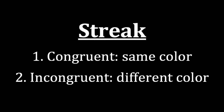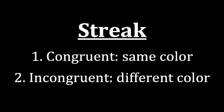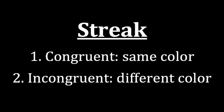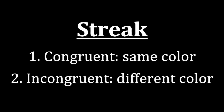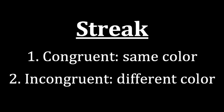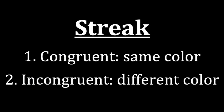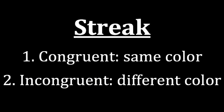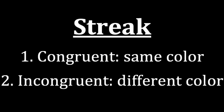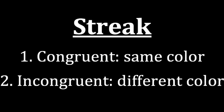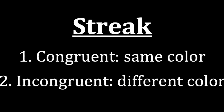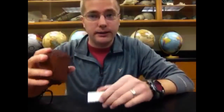When we look at streak, we are looking at two things. We are looking at whether there is a streak called congruent, meaning the color of the powder on the plate is the same as the color of the mineral in our hand, or incongruent, meaning the color of the powder we see on the plate is different than the color of the mineral we're holding in our hand. The important thing to write down when it comes to the lab is the color of the streak itself.